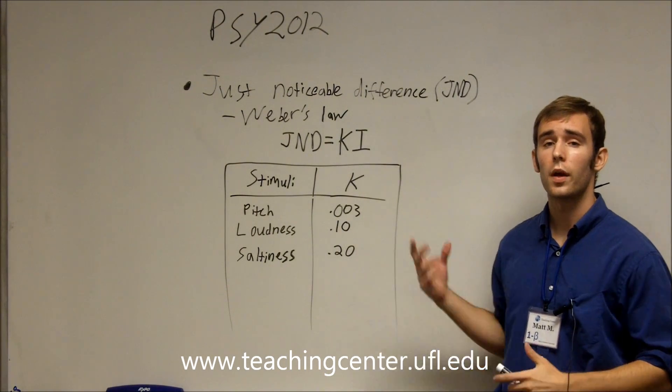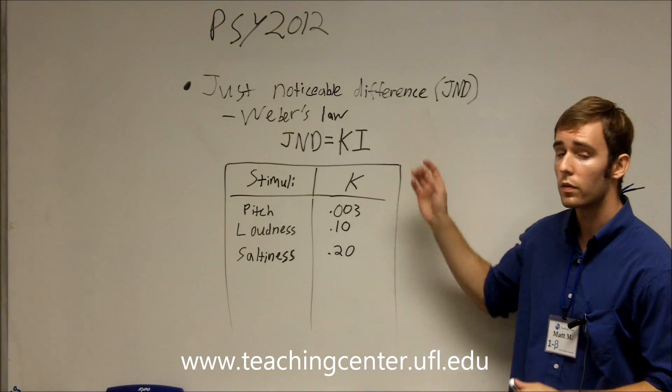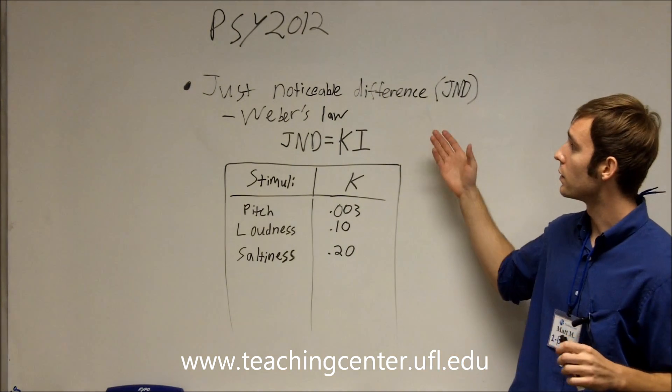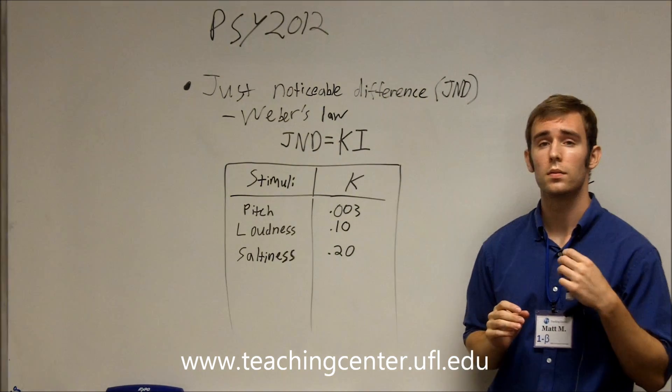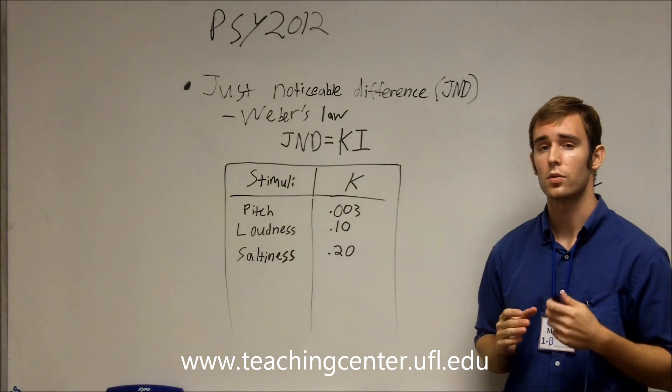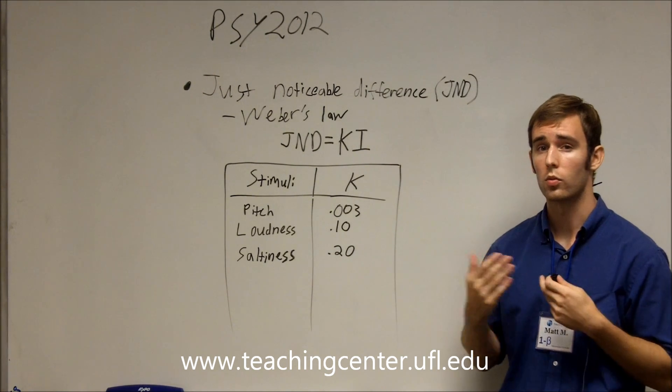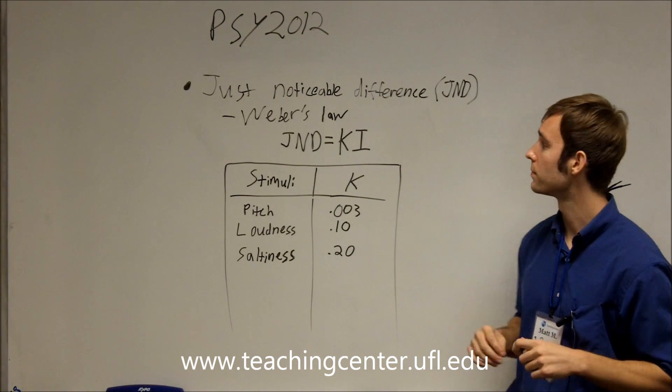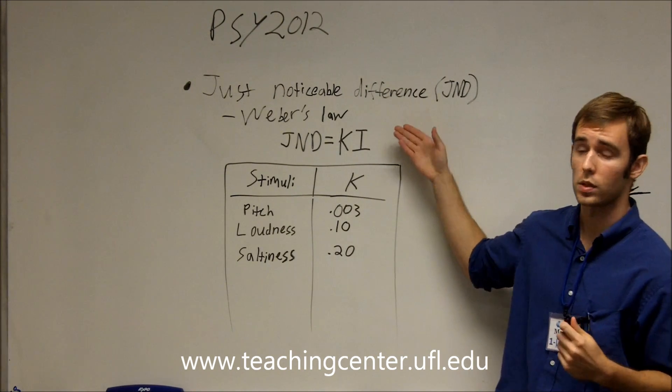Since we're talking about perception, an important concept is the just noticeable difference, the JND. This is the amount a stimulus has to change, either become stronger or weaker, before you can perceive that it's changed. And this brings us to Weber's Law.